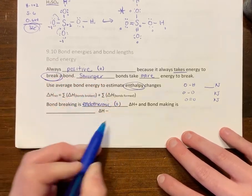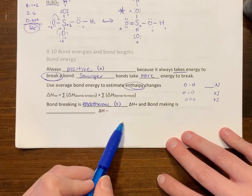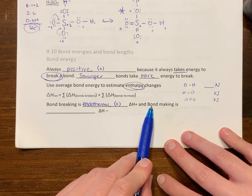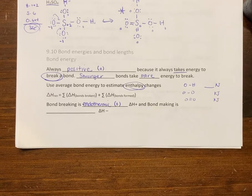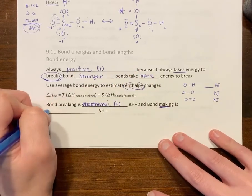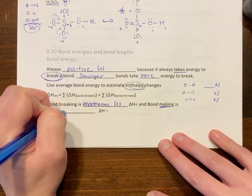When you form bonds, atoms get more stable, so bond making is exothermic.